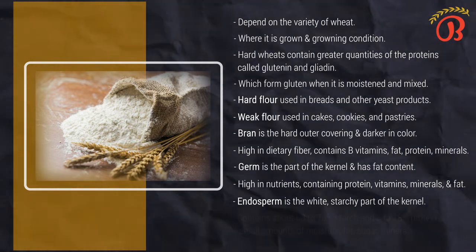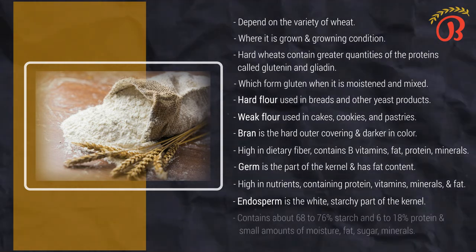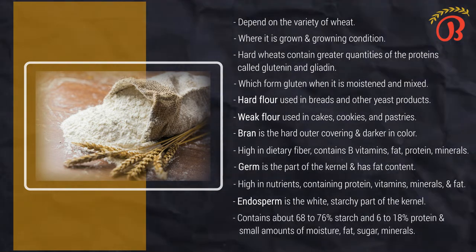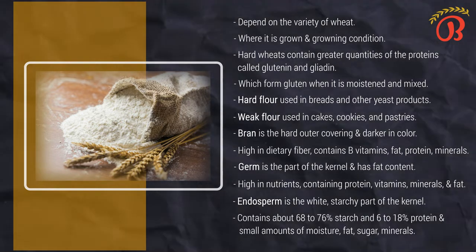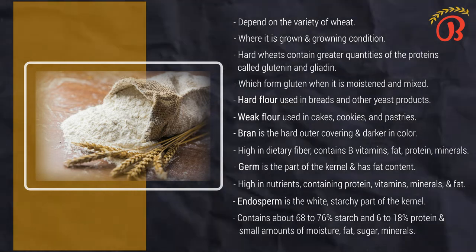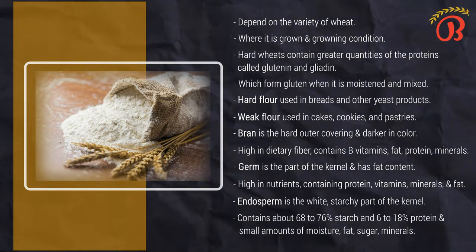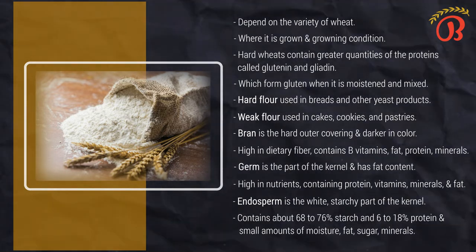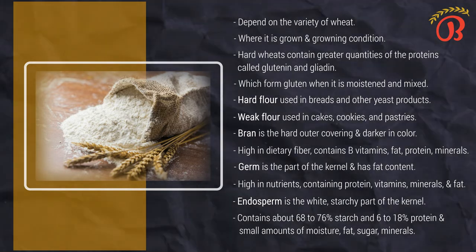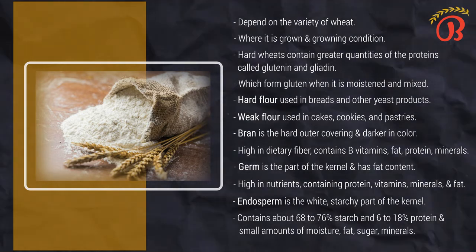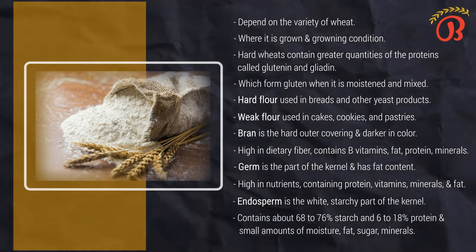Depending on its source, the wheat endosperm contains about 68 to 76% starch and 6 to 8% protein. The endosperm also contains small amounts of moisture, fat, sugar, minerals, and other components.